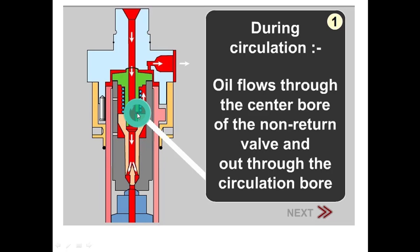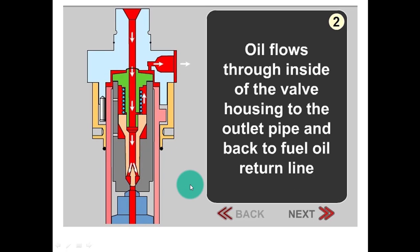You can see the circulation bore. Oil flows through the circulation bore, then flows through inside the valve housing to the outlet pipe and back to fuel oil return line.